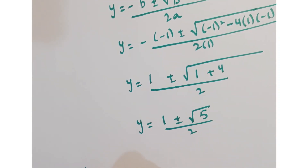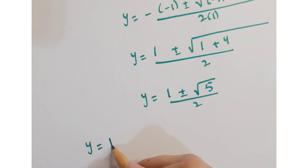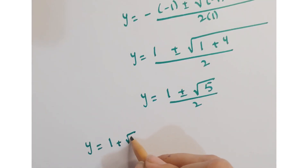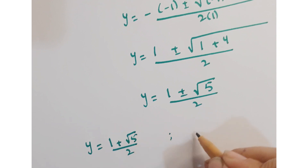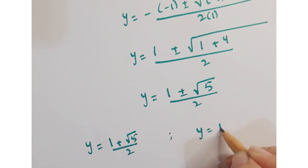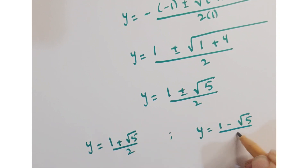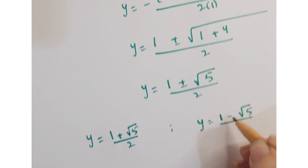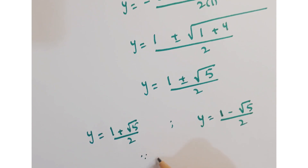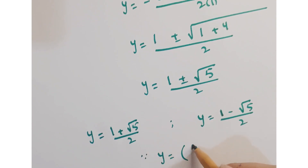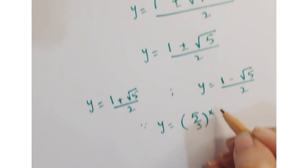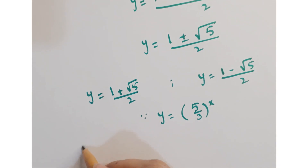So we have two possibilities: y equals (1 plus root 5) upon 2, and y equals (1 minus root 5) upon 2. Now, since according to our assumption y equals (5 upon 3) whole to the power x.